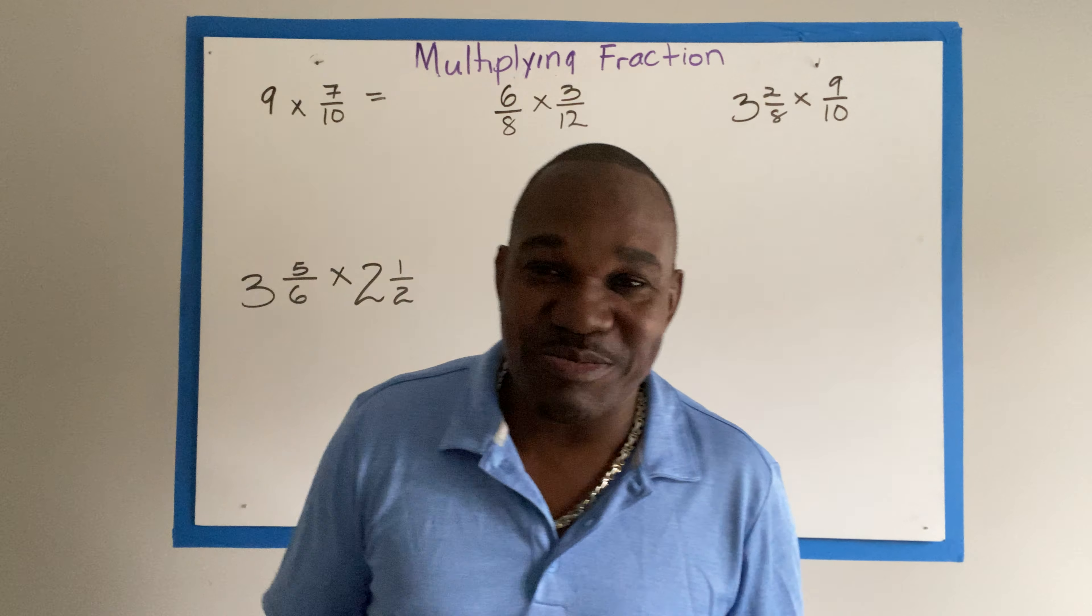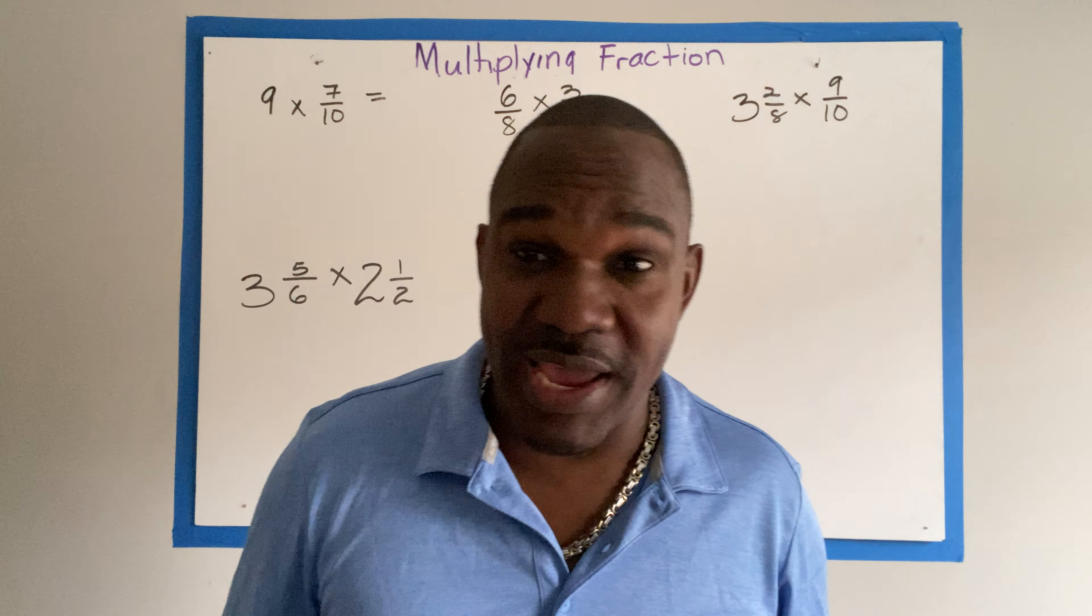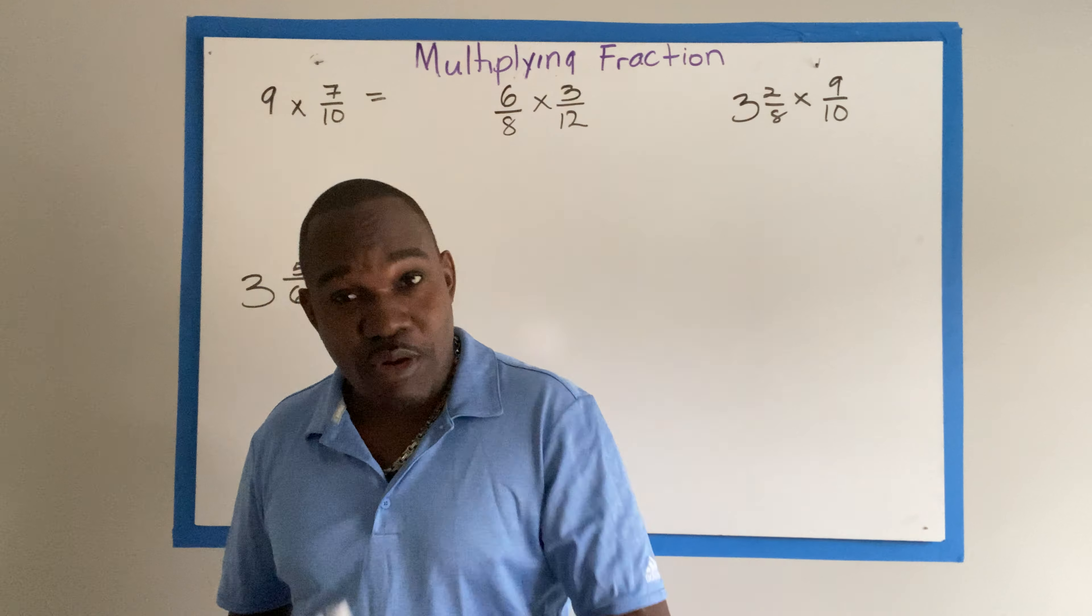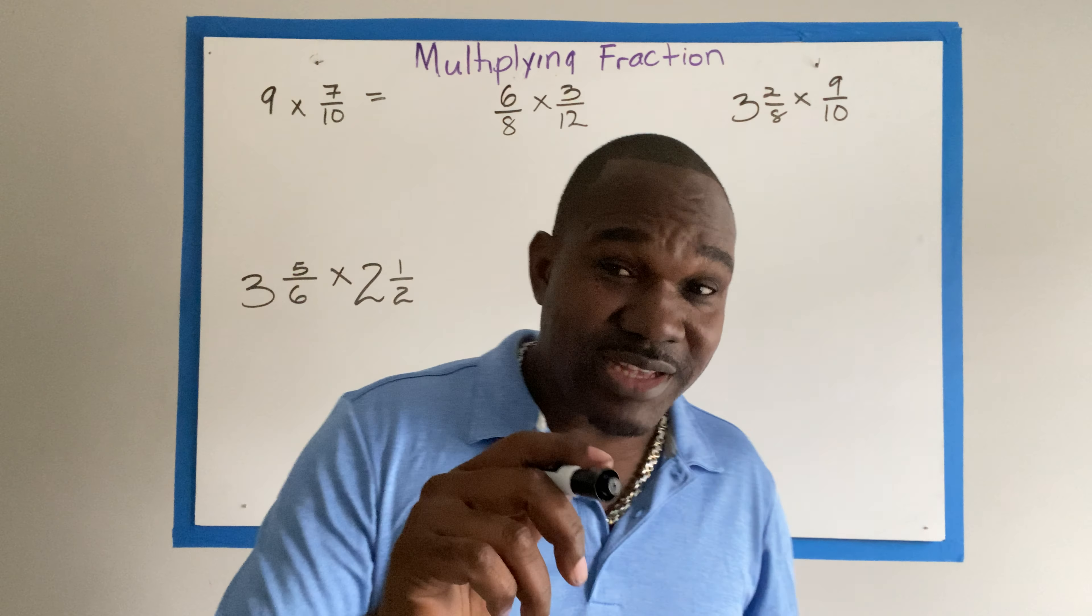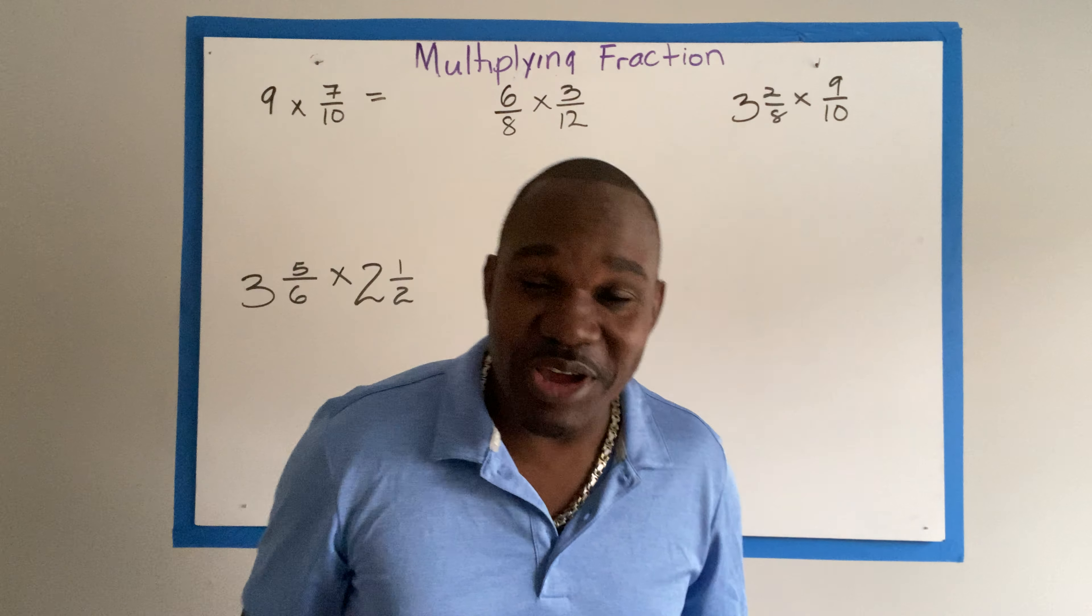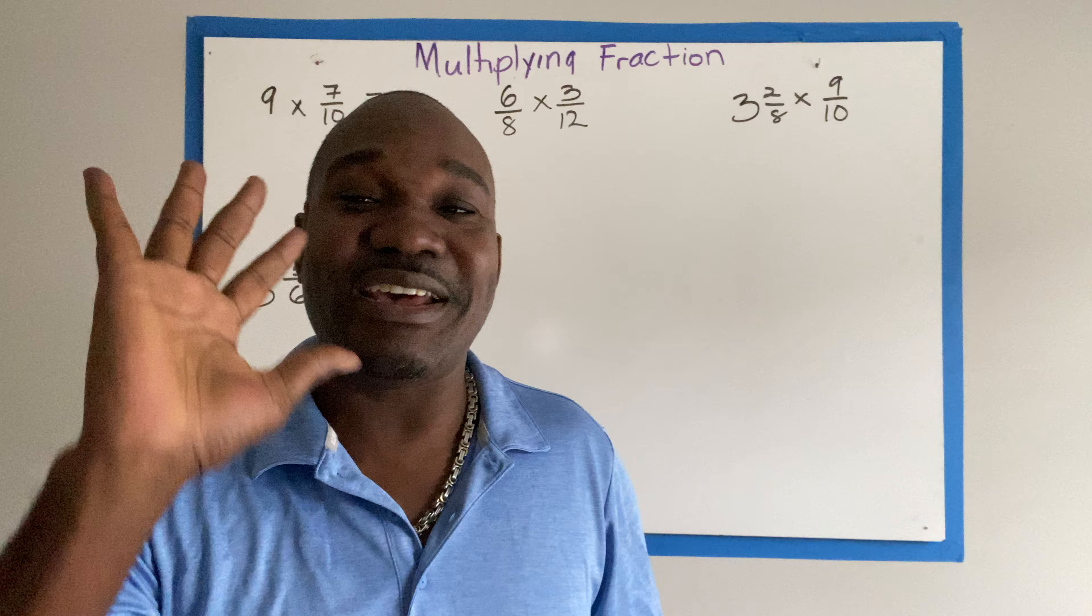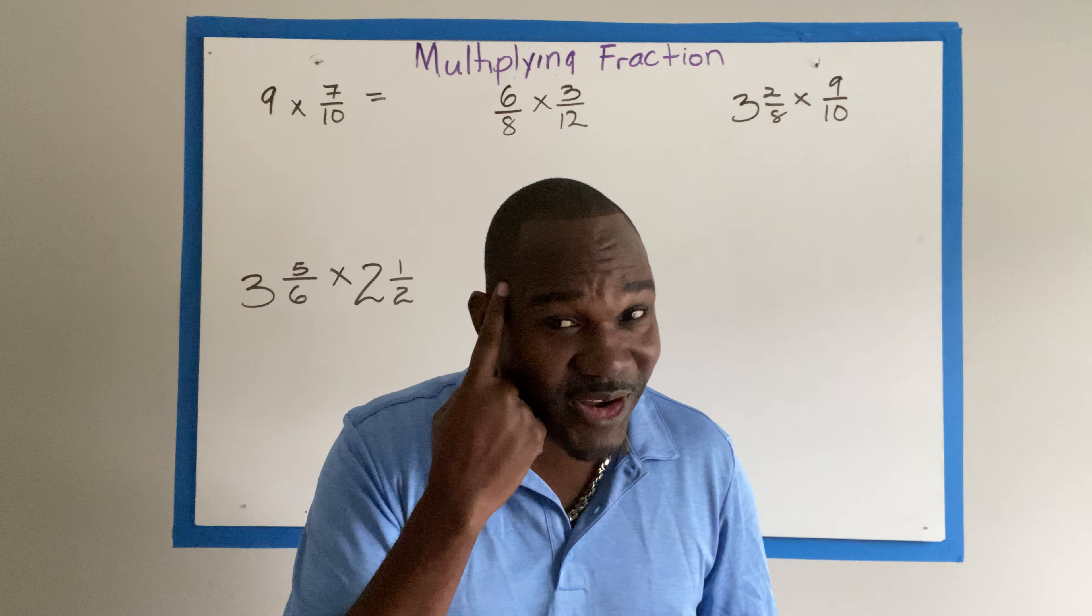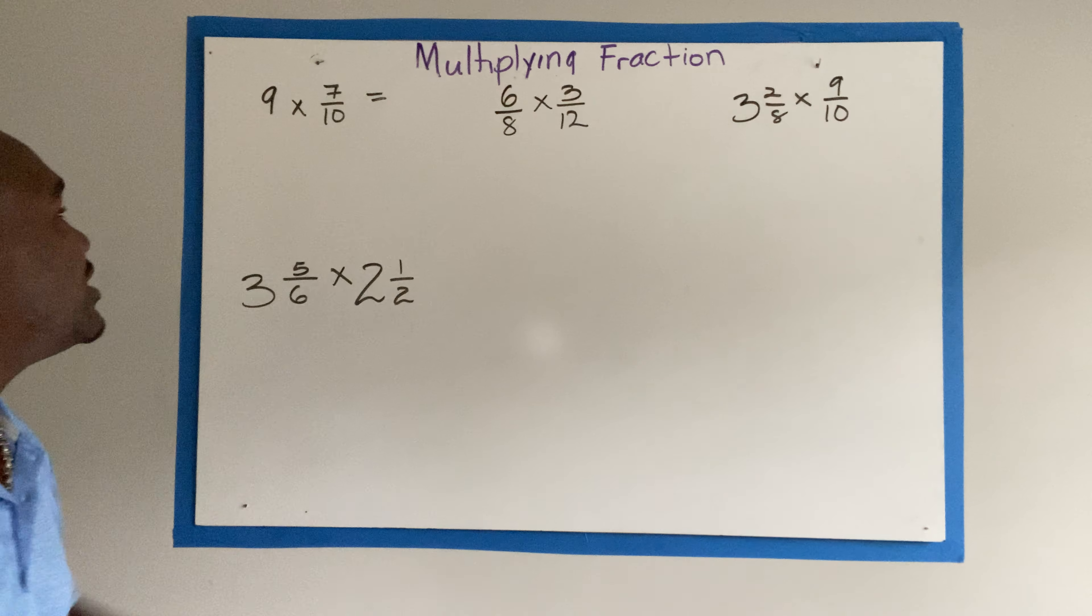Hey guys, this morning we'll be looking at multiplying fractions. But before we go any further, let us answer this riddle. If 2 is a company and 3 is a crowd, what is 4 and 5? Think about it. Alright, let's get into the lesson.